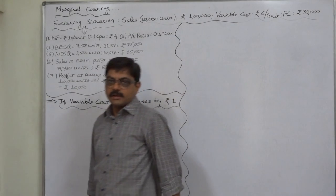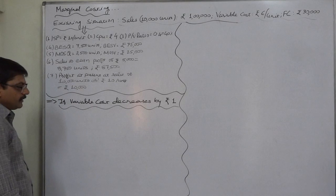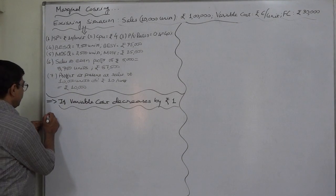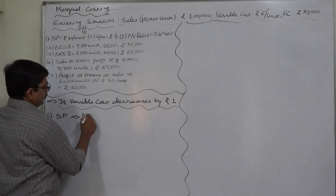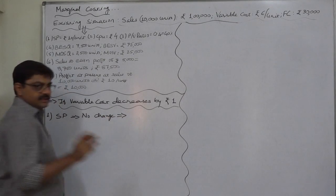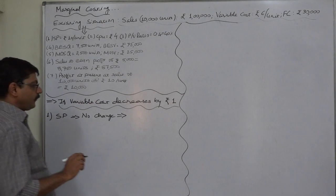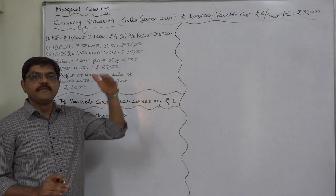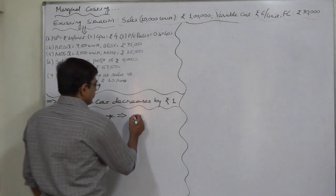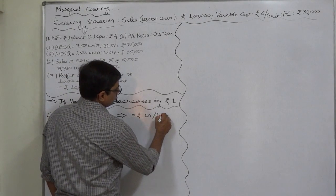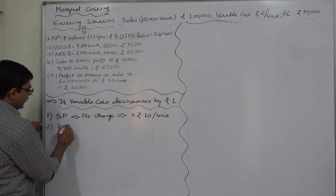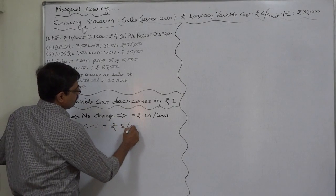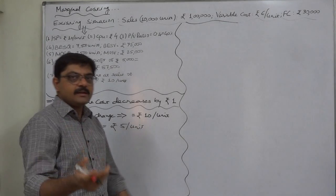In this situation, if variable cost decreases by rupee 1 due to the effect of external forces, let us check the effect of this decrease. Selling price will not change because it is determined by internal decision-making, while variable cost and fixed cost change due to uncontrollable external forces. So selling price remains rupees 10 per unit, and the revised variable cost is rupees 6 minus rupee 1 equals rupees 5 per unit.